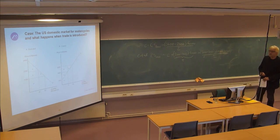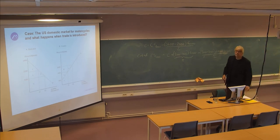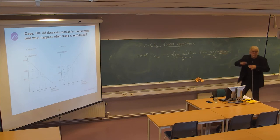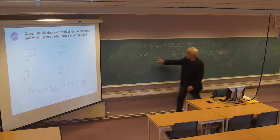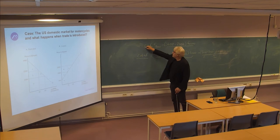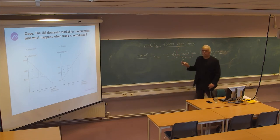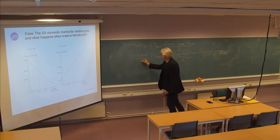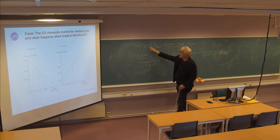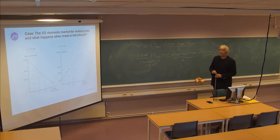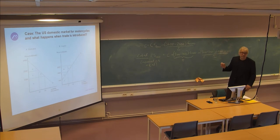Then (2,000 minus 1,000) times (65,000 minus 40,000) divided by 2. So if we get a change that can reduce prices, we could then argue that the increased welfare from the consumer's point of view — the increased consumer surplus — is equal to area C plus D, because C was already in place when you had price equal to $2,000.